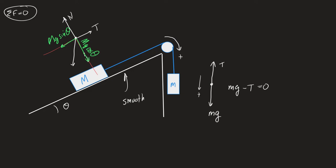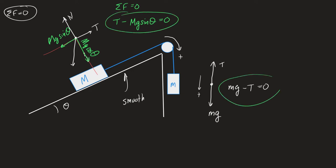The net force is still zero for the ramp box. So tension in the positive direction minus mg sine theta in the negative direction equals zero. This problem is about finding the angle at which this system would be at rest. I can see two relationships — one that has the angle in it. I'm pretty sure I can eliminate tension between these two equations.